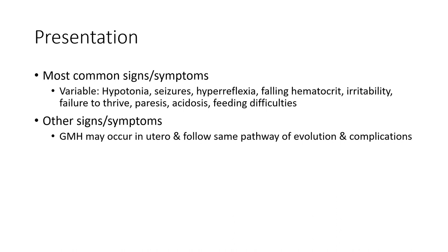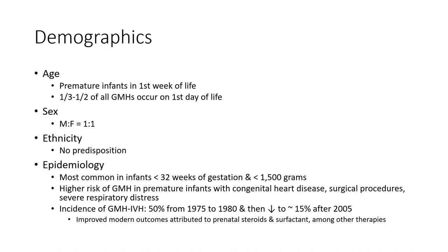Other signs and symptoms: Germinal Matrix Hemorrhage may occur in utero and follow the same pathway of evolution and complication. Demographically, premature infants in the first week of life are most affected. One third to one half of all Germinal Matrix Hemorrhages occur on the first day of life, with male equal to female incidence.